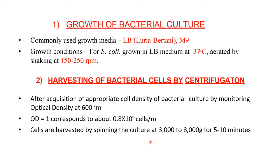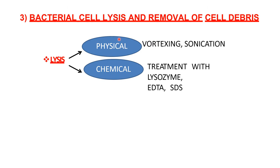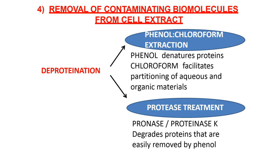The cells are harvested by spinning the culture at 3,000 to 8,000 g for 5 to 10 minutes. Bacterial cell lysis and removal of cell debris can be done either physically or chemically. Physical lysis is done by vortexing and sonication. Chemical lysis involves treating with lysozyme, EDTA, and SDS.